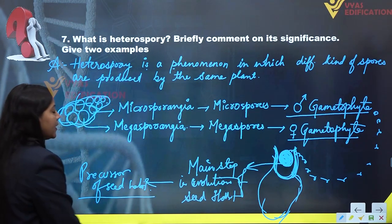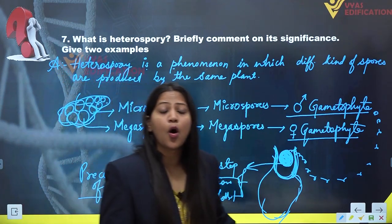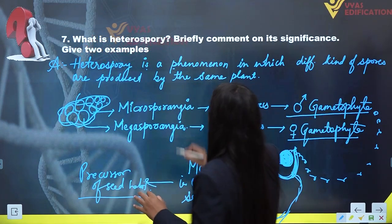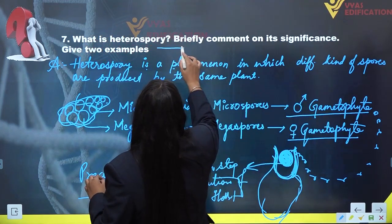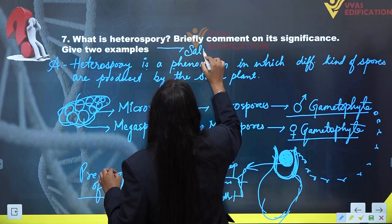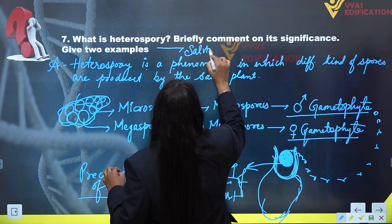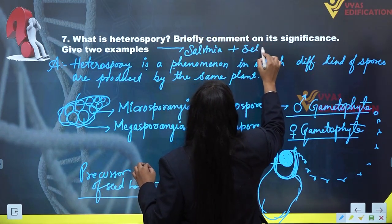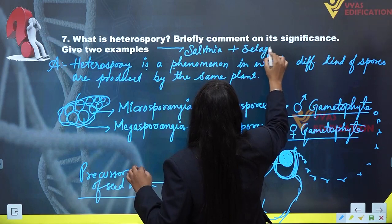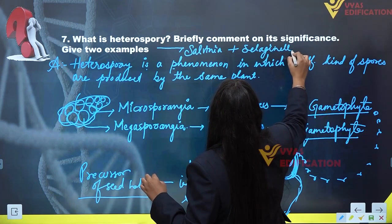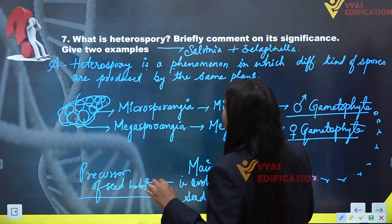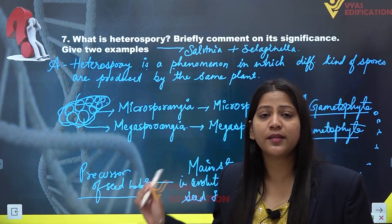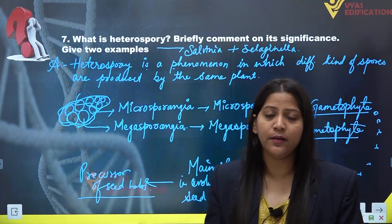This is the significance of heterospory. The two examples of heterospory are Salvinia and Selaginella. This is the complete solution of question number seven.